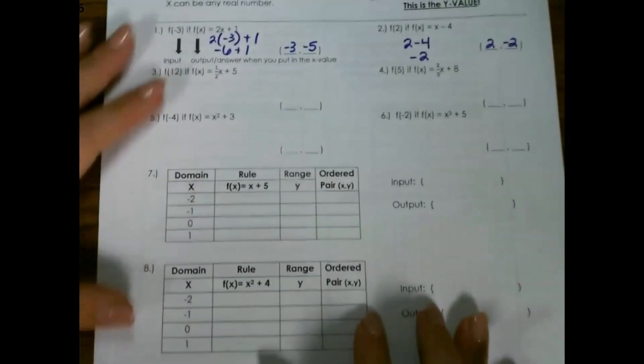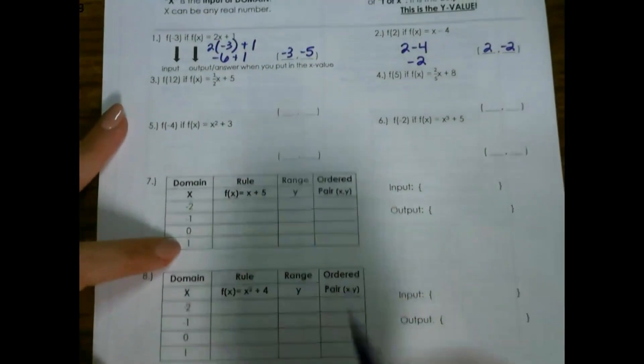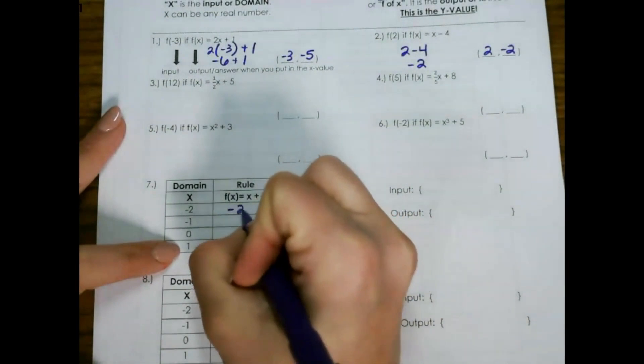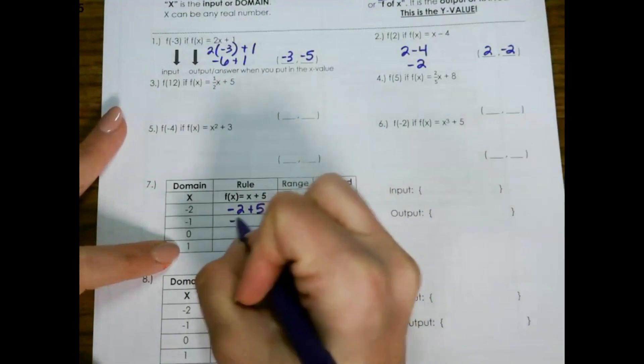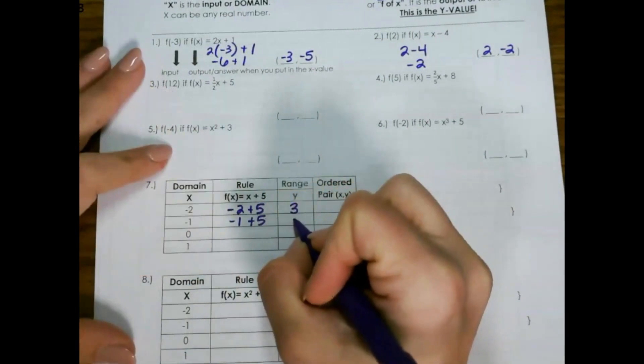Let's look at when we have a table. So if these are all of my x values, I simply just plug in x and solve using this rule, x plus 5.